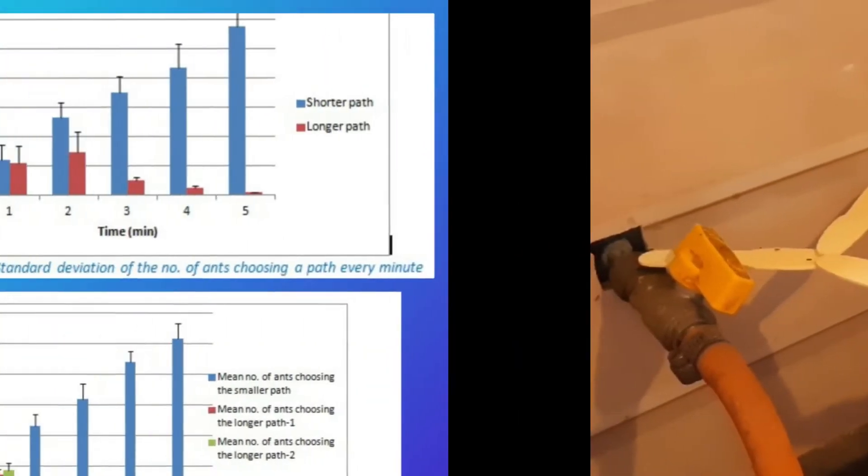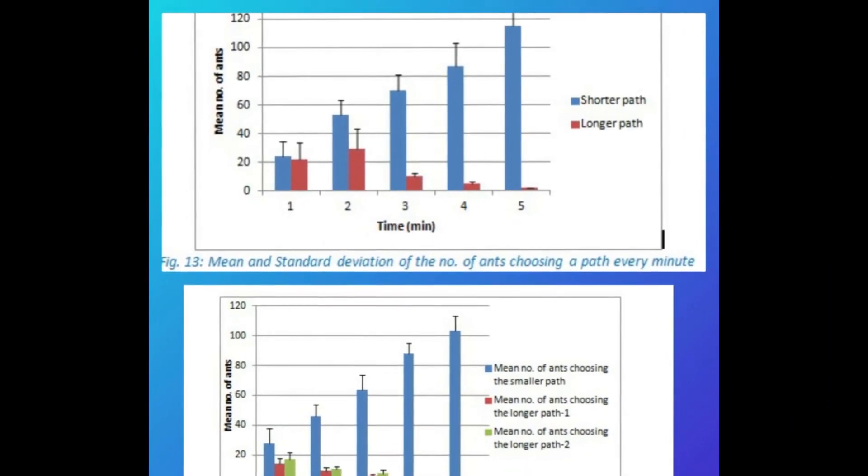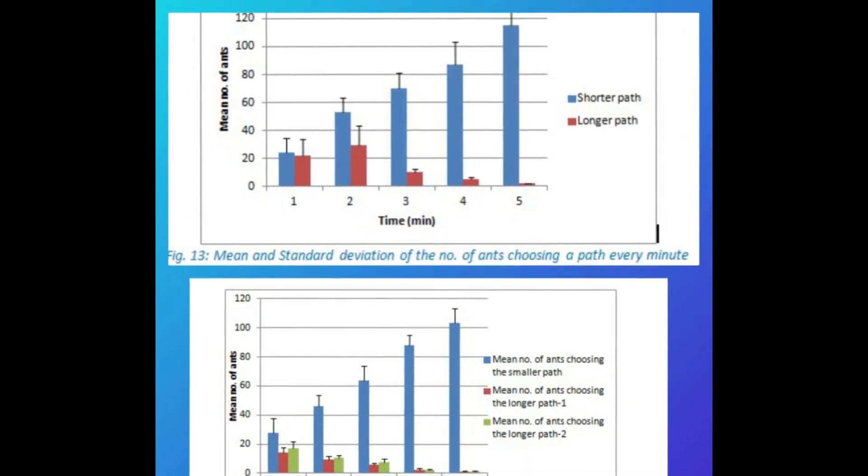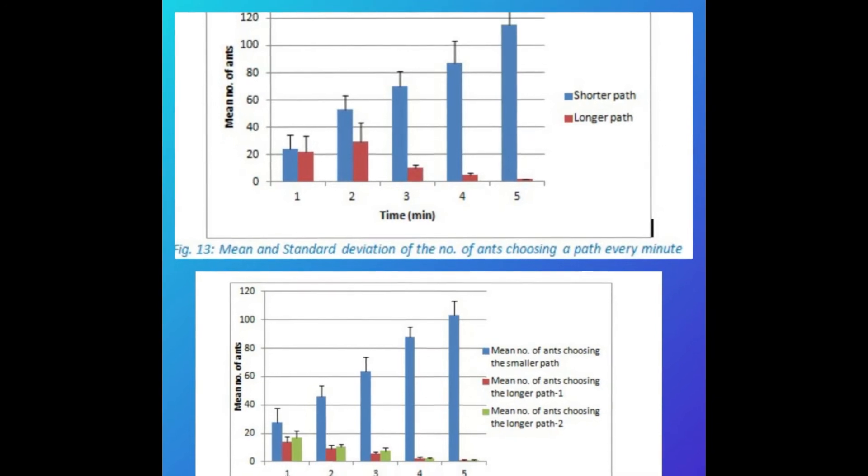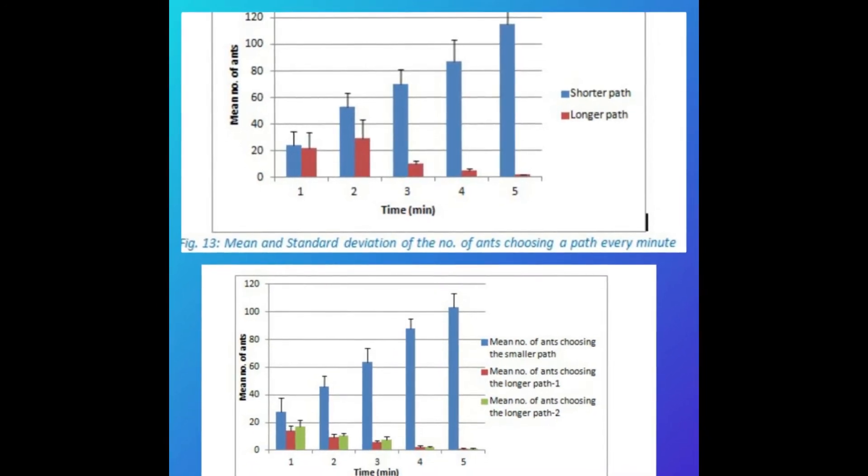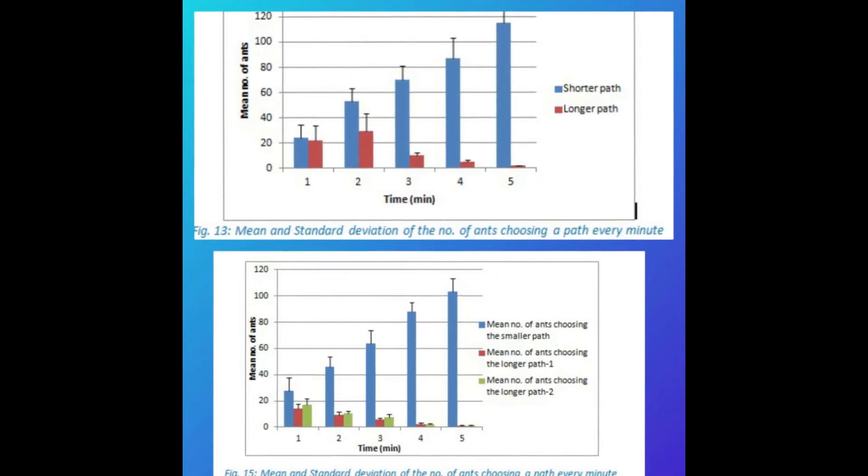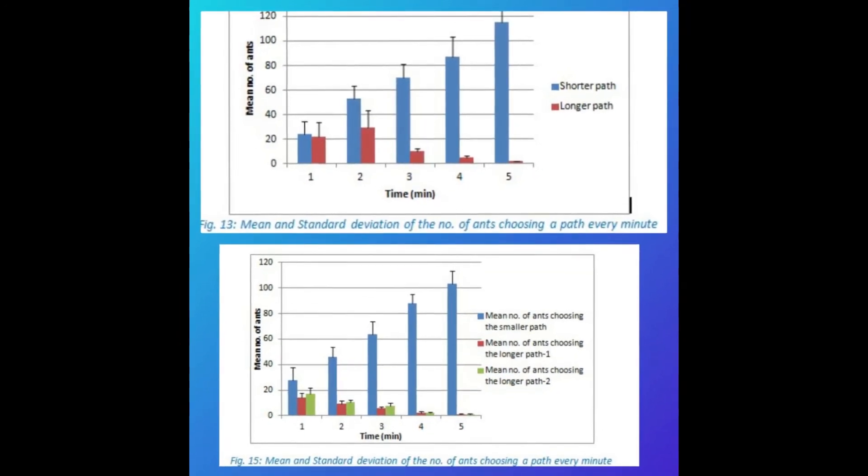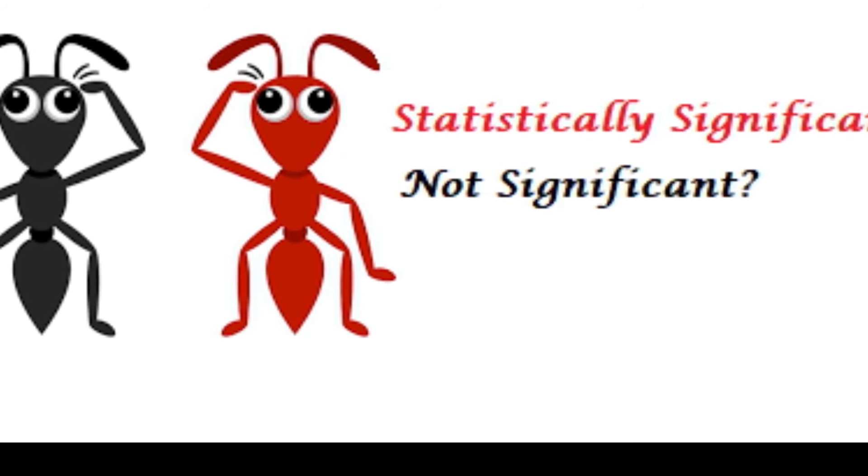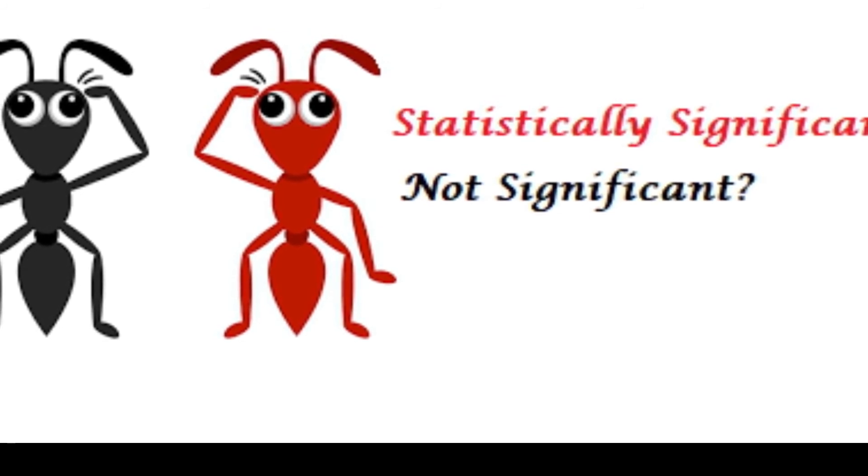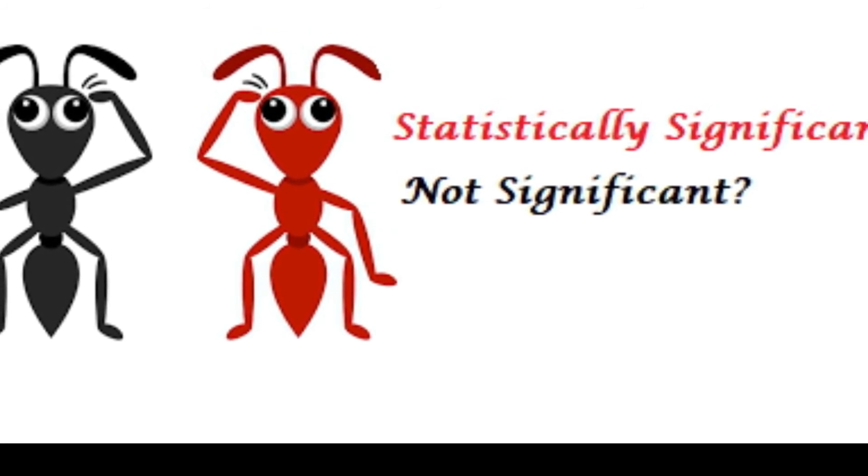The mean and standard deviation of the number of ants choosing a path every minute were calculated and plotted. For the experiment with two paths of unequal length, an unpaired t-test was performed to determine if there is a significant difference between the average number of ants choosing the two paths during different periods of time.